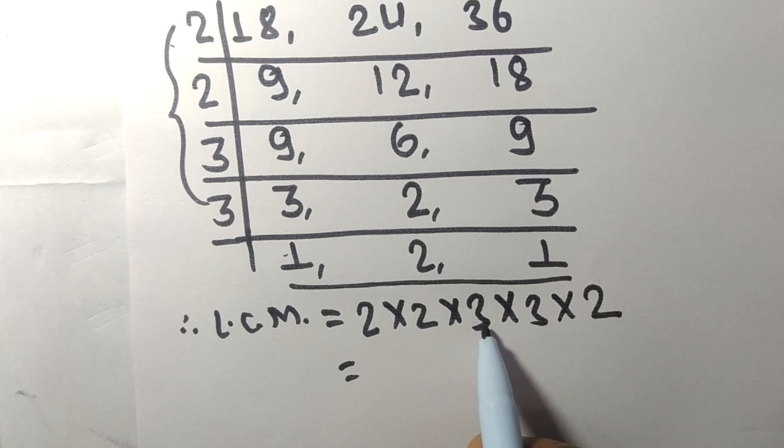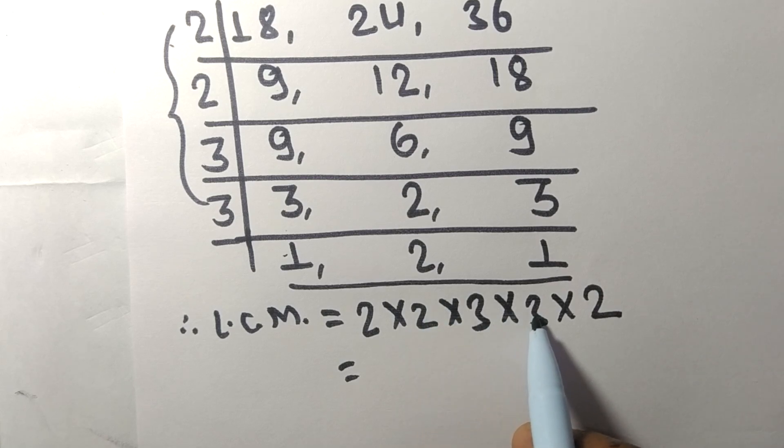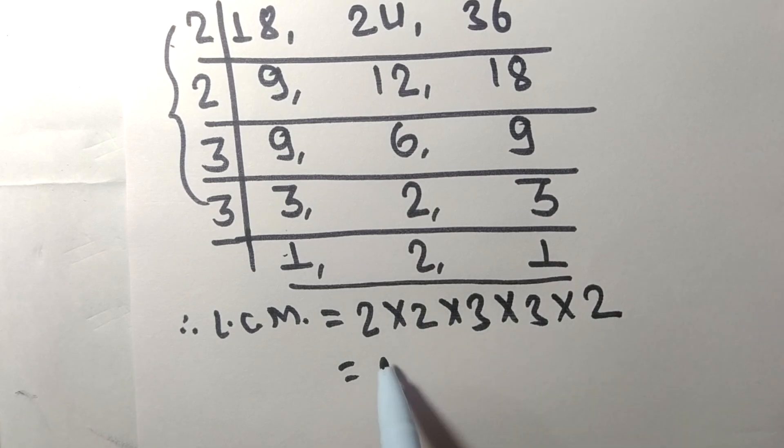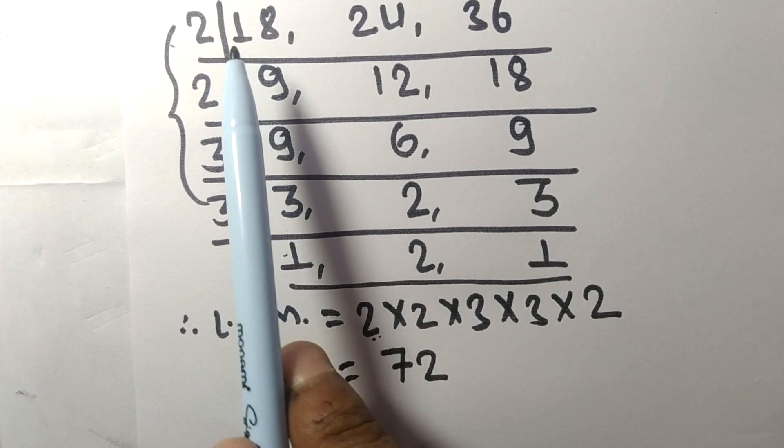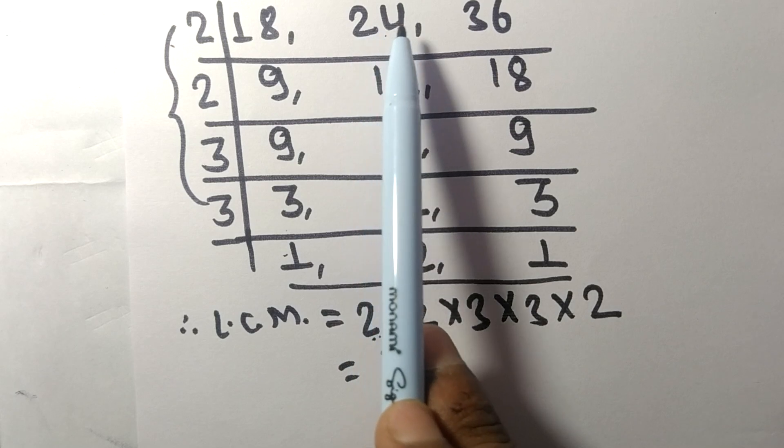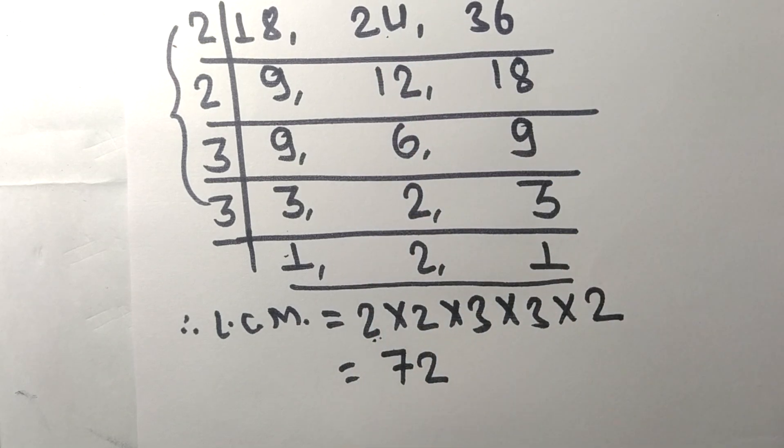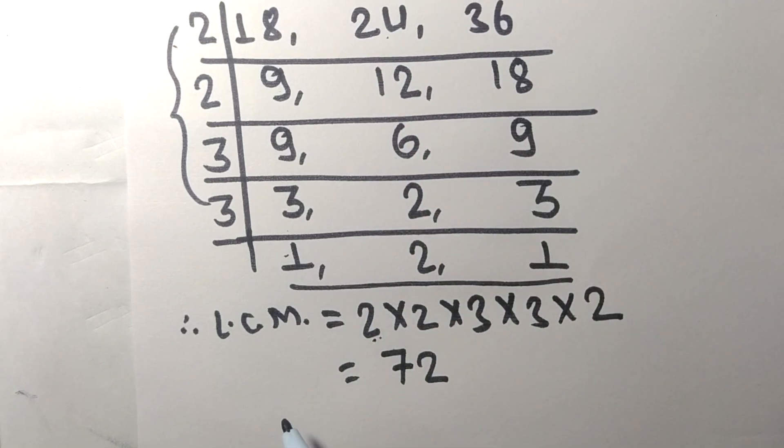By multiplying all these numbers we got 72. So 72 is the LCM of 18, 24, and 36. So this much for today, and thanks for watching.